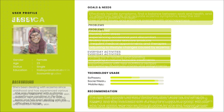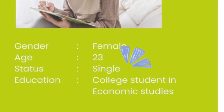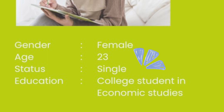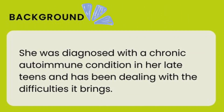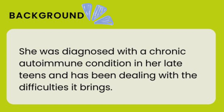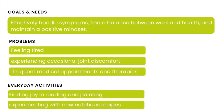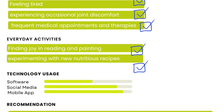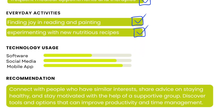Jessica is the final persona. She is 23 years old and single, an academic student at college. She was diagnosed with a chronic autoimmune illness in her late teens and has had to deal with the consequences. Her goals and needs are to effectively handle symptoms, find a balance between work and health, and maintain a positive mindset. Her problems include feeling tired, experiencing occasional joint discomfort, and requiring frequent medical appointments and therapies. Her everyday activities include finding joy in reading, painting, and experimenting with new nutritious recipes.